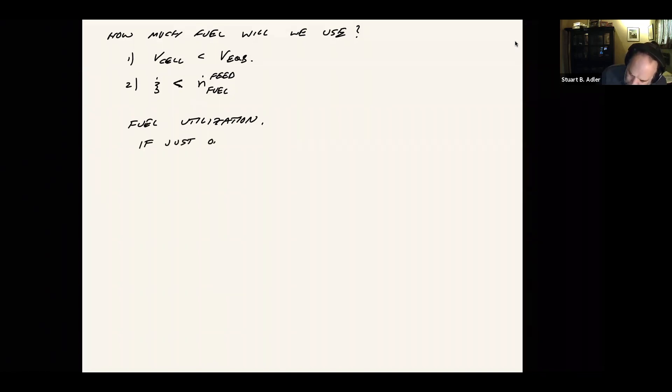But if just one fuel, then the way we would usually say this is that the stack use or the stack consumption of that fuel is equal to U times N dot of the fuel in the feed. And this U is called the utilization. And it spans the value 0 to 1.